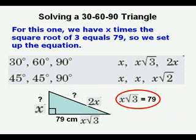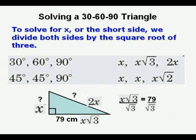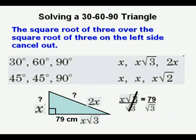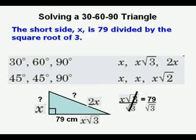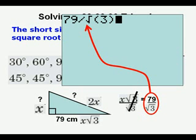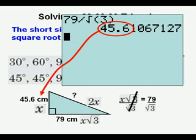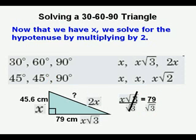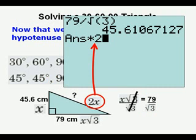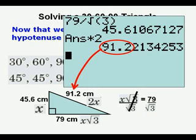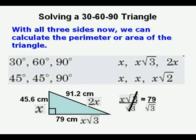Now we're going to look at another one, the next problem, where we know the long leg of 79 centimeters. And we have x times the square root of 3 equals 79. So we set up the equation. To solve for x or the short side, we divide both sides by the square root of 3. So those cancel out on the left side. And the short side x is 79 divided by the square root of 3. And here it is in our calculator. And here we have it, 45.6 centimeters. And now that we have x, we solve for the hypotenuse by multiplying 45.6 times 2. And we get hypotenuse equal to 91.2. With all three sides now, we can calculate the perimeter or area of the triangle.